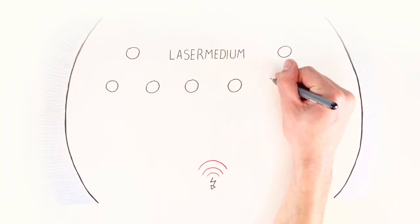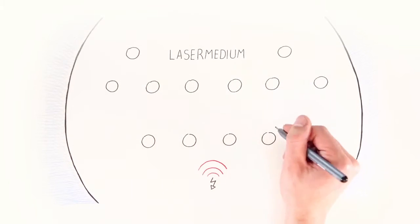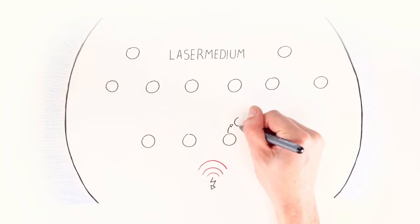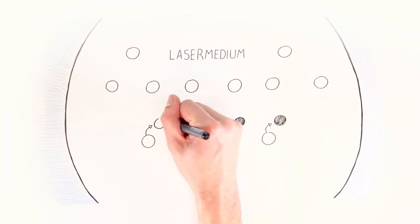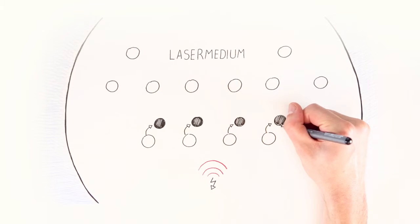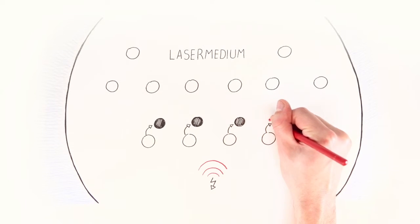The laser medium consists of particles that are in their basic state. The pump feeds energy into the particles, and they rise to a higher energy level. If any of these particles then falls back into their basic state, energy is released in the form of a photon, also called Light Quantum.